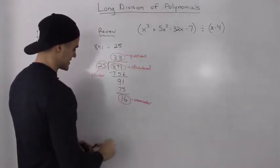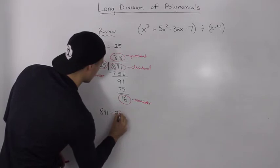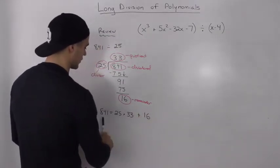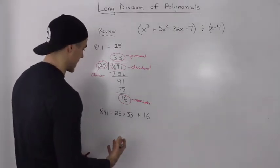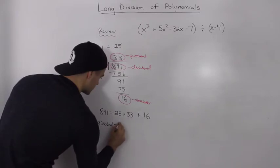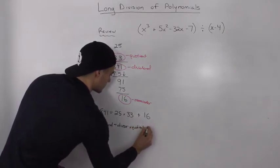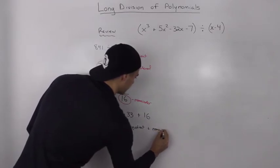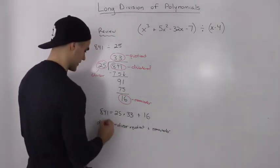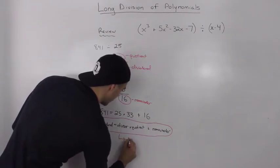If we rewrite this result as a statement: 841 is equal to 25 (the divisor) times the quotient, plus the remainder of 16. So as a general statement, the dividend is equal to the divisor times the quotient plus the remainder. That always holds in every case, and this general result is called the division statement, which you will have to know for this section.